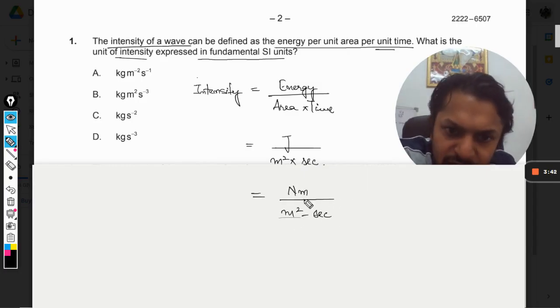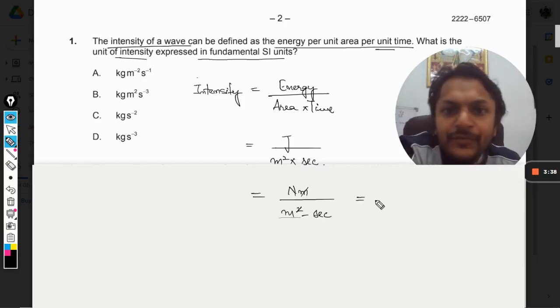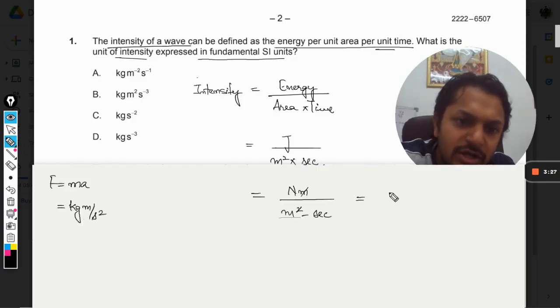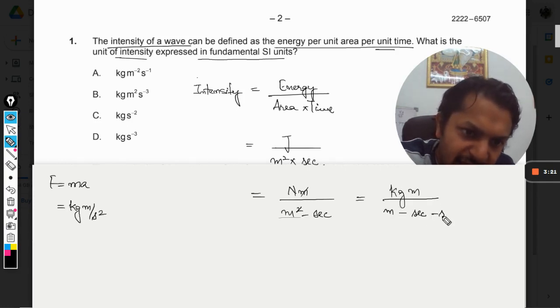Now what is newton? Again we have to go into details here. Newton is force. F equals m times a, so newton can be taken as kg meter per second square. So it will be kg meter per meter second and second square also.